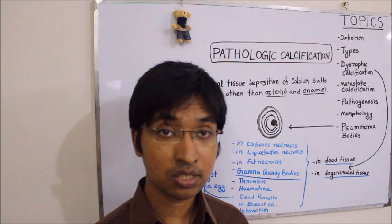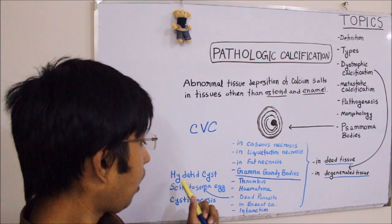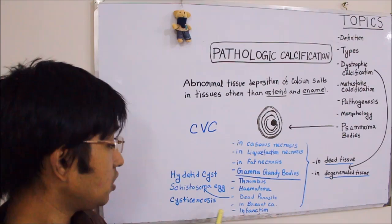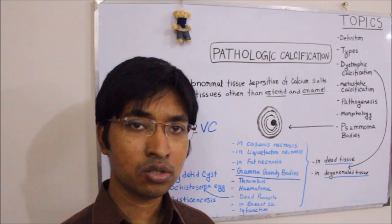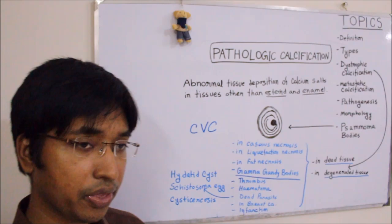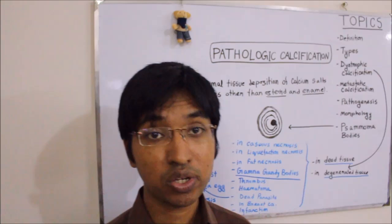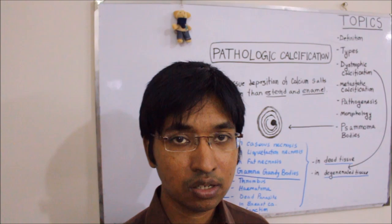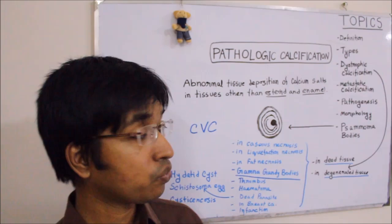The next example of calcification is when there are dead parasites — examples are hydatid cyst, schistosoma egg, and cysticercosis. In all these cases, calcium can deposit on these dead parasites and result in dystrophic calcification. Dystrophic calcification can also occur in breast carcinoma, which we can see by mammography, and it can also occur in infarction as well.